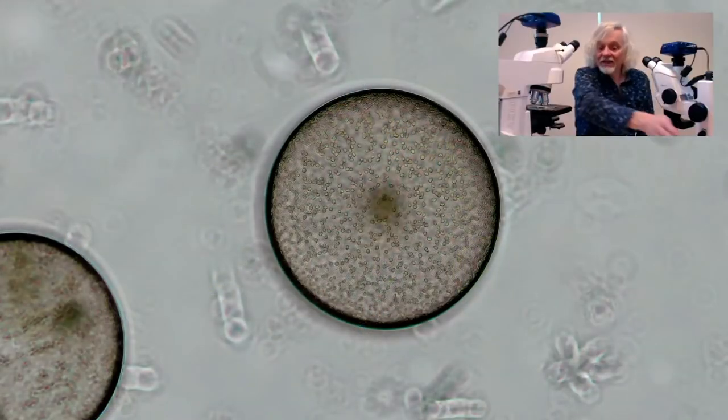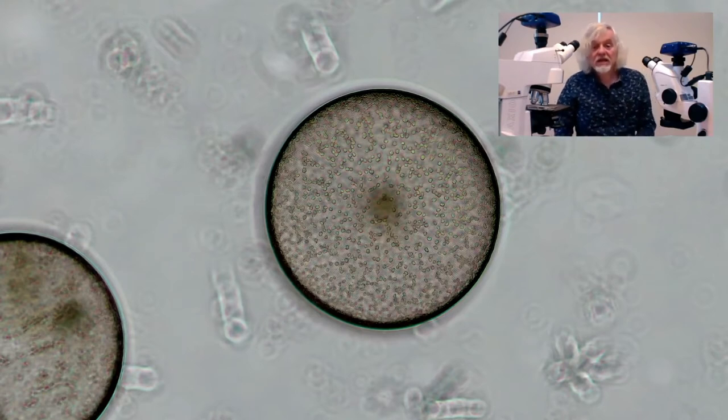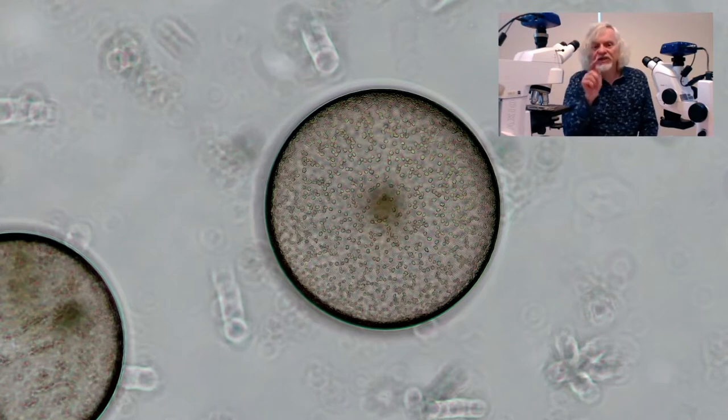Here we go. That is a single Coscinodiscus seen much closer. You can see it's got all these little dotties on it.